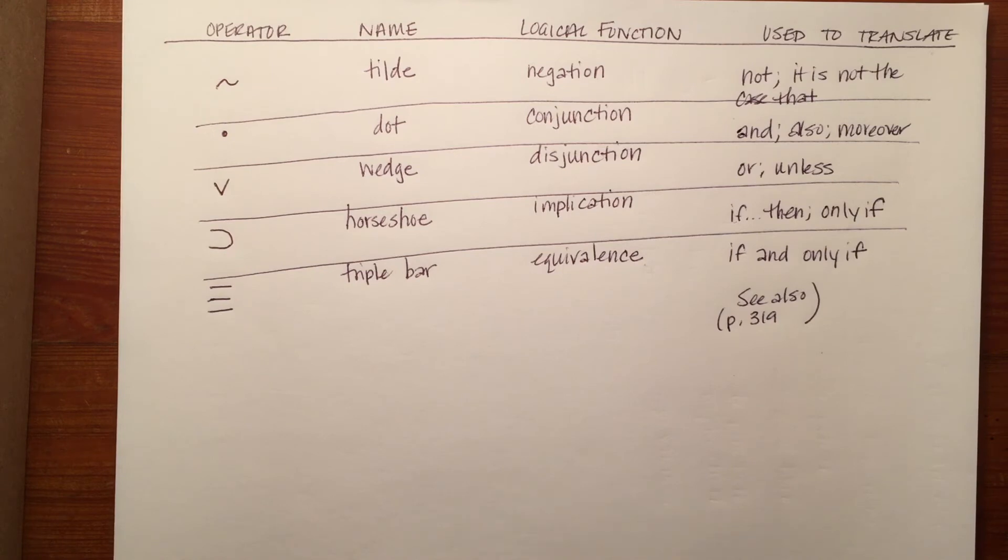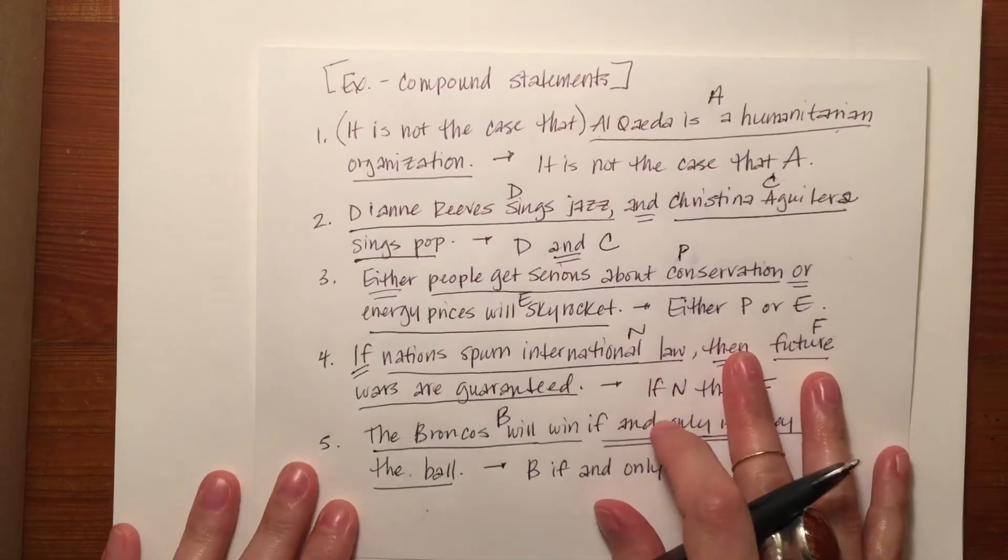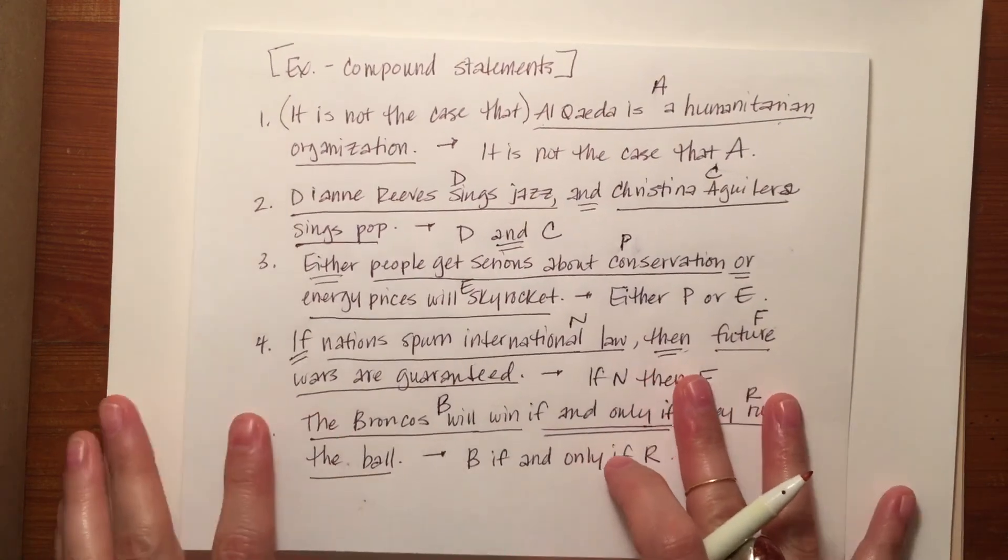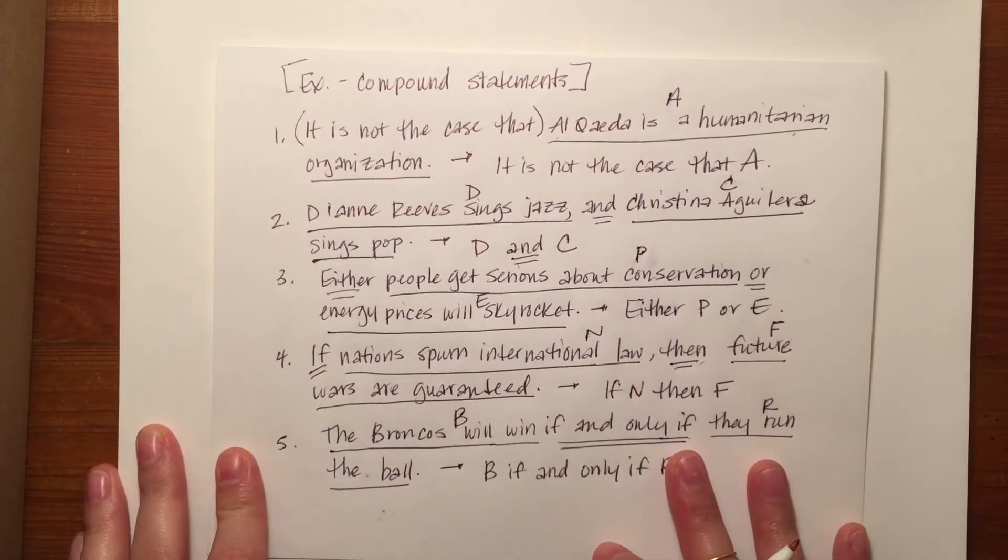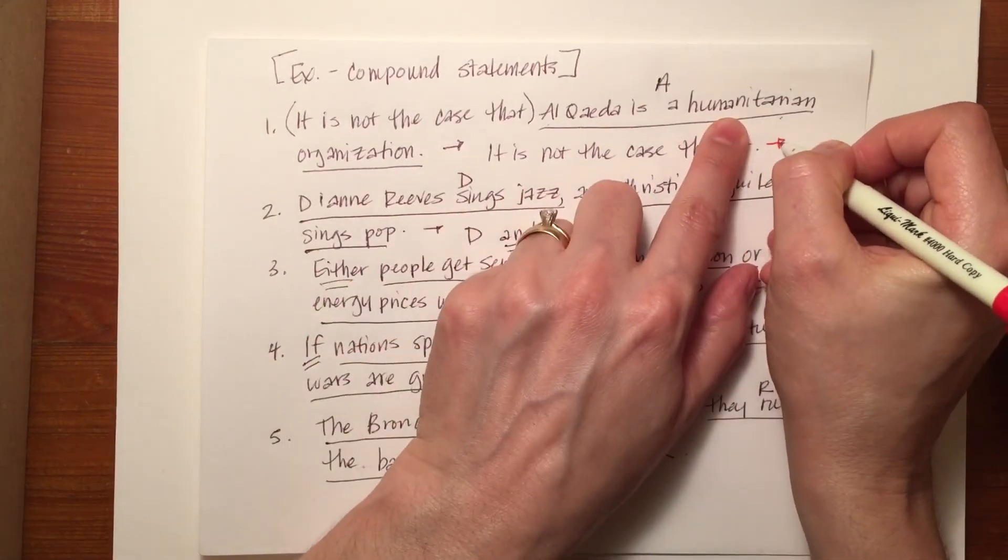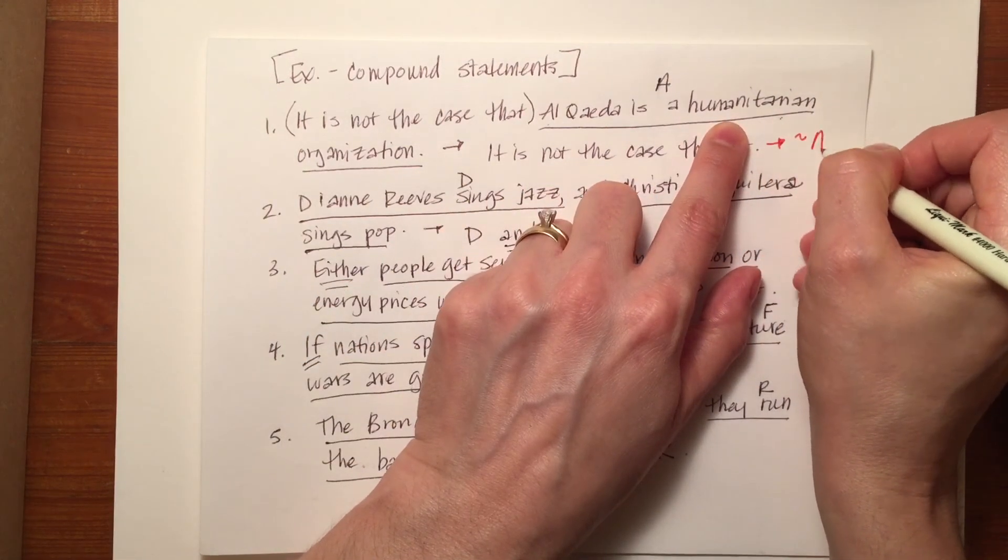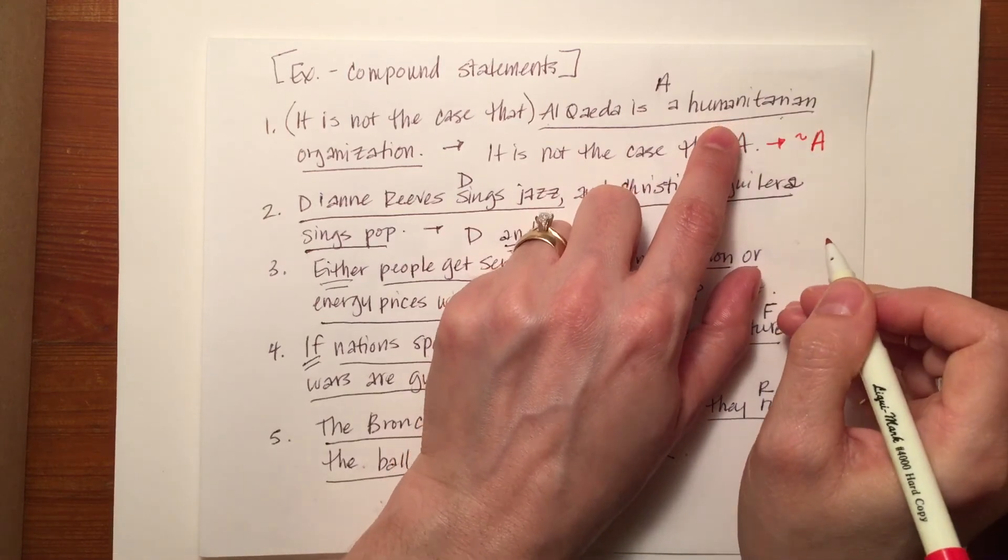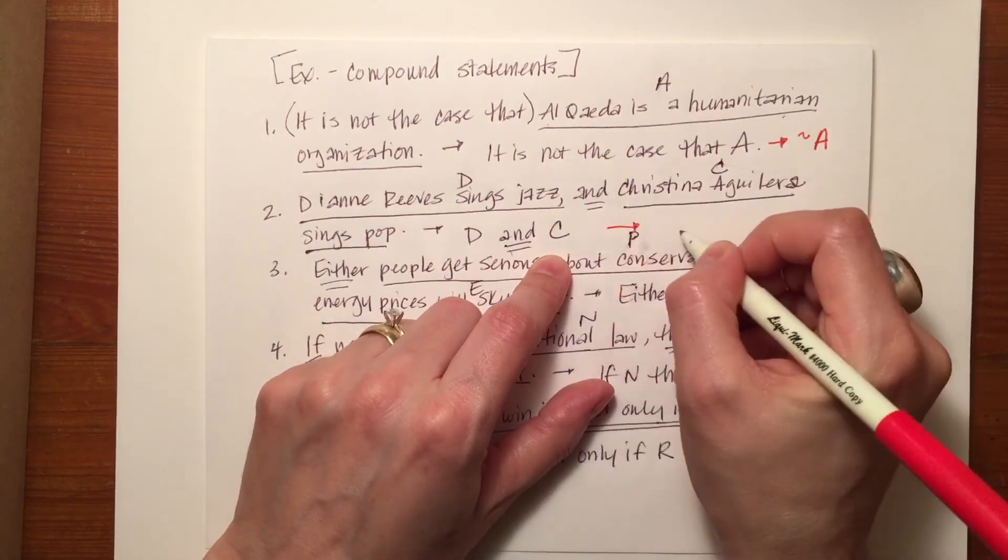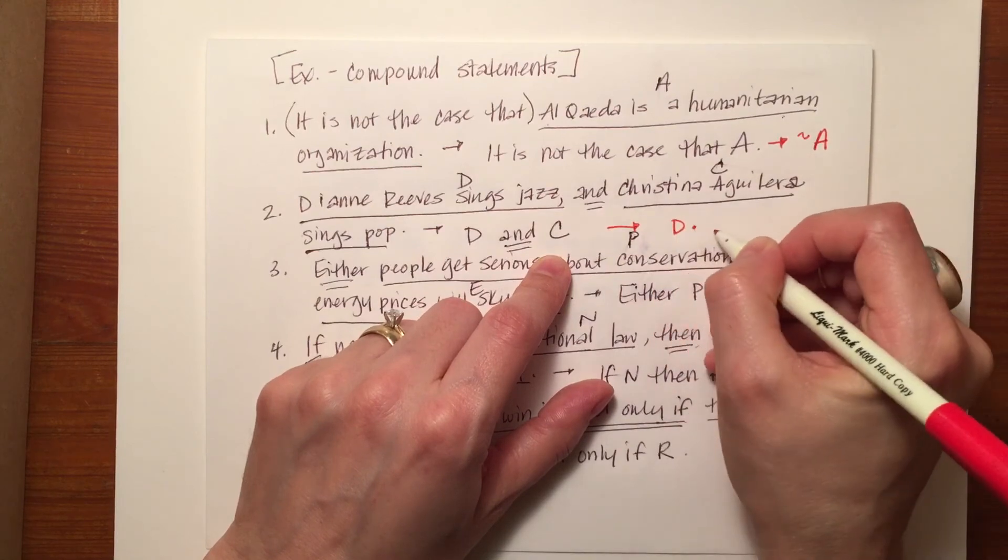So, if we were to go back and take a look at those compound statements that we saw earlier, we would see that we could now simplify them even further into better standard form. So, 'it is not the case that A' would become tilde A. Just as simple as that. 'D and C' would become D dot C.